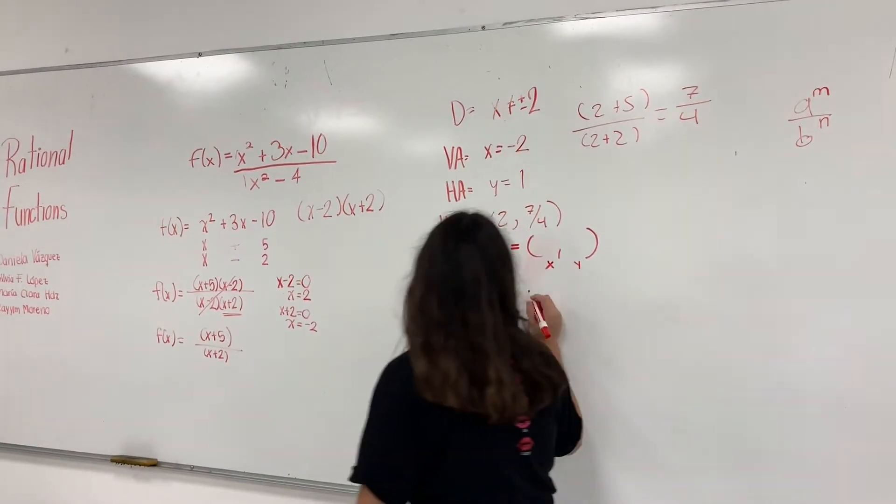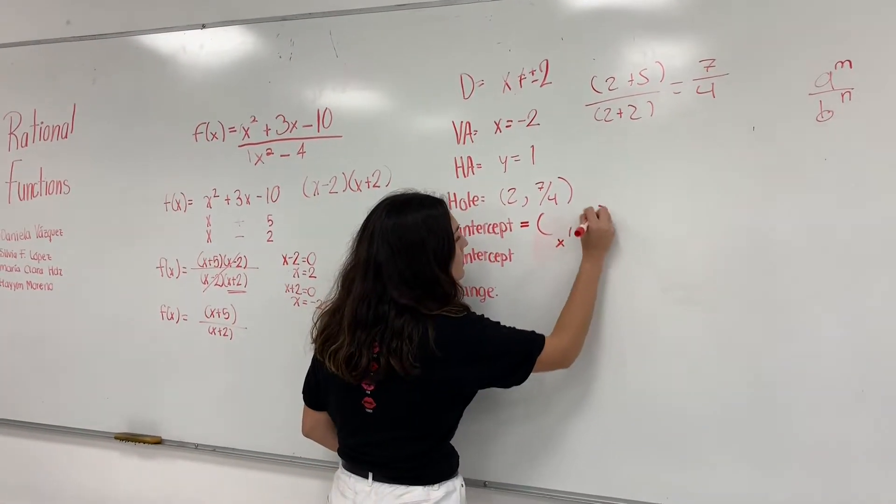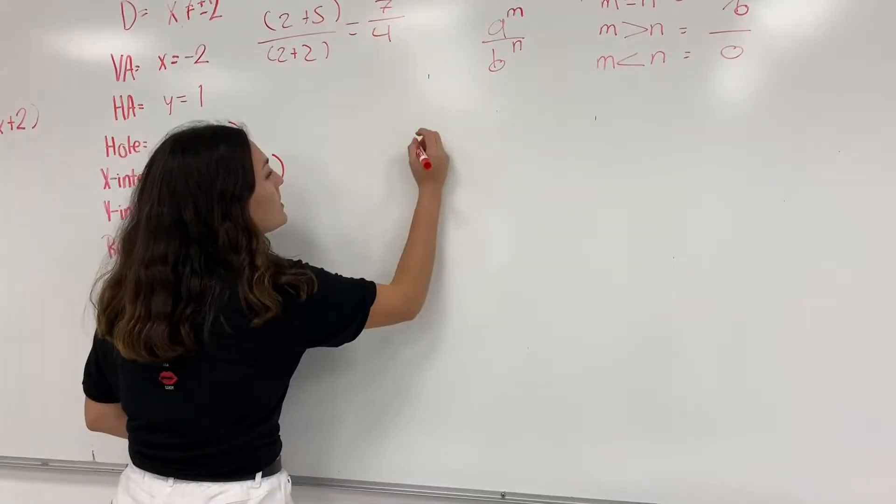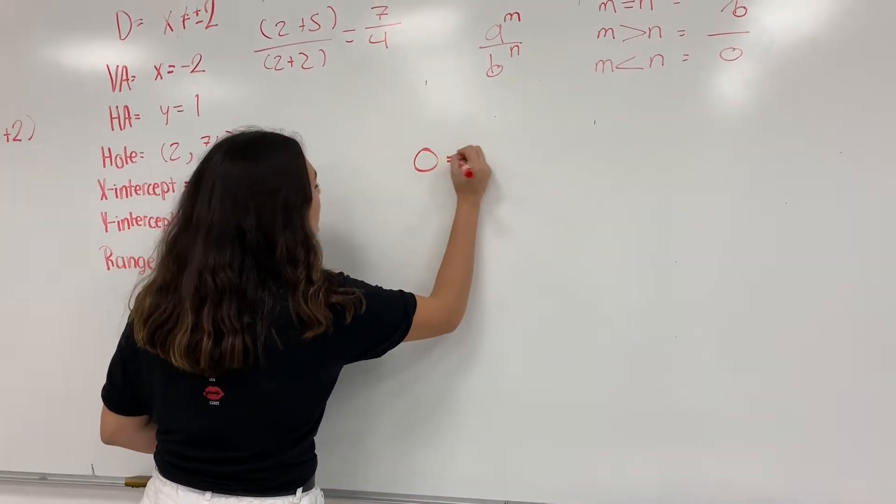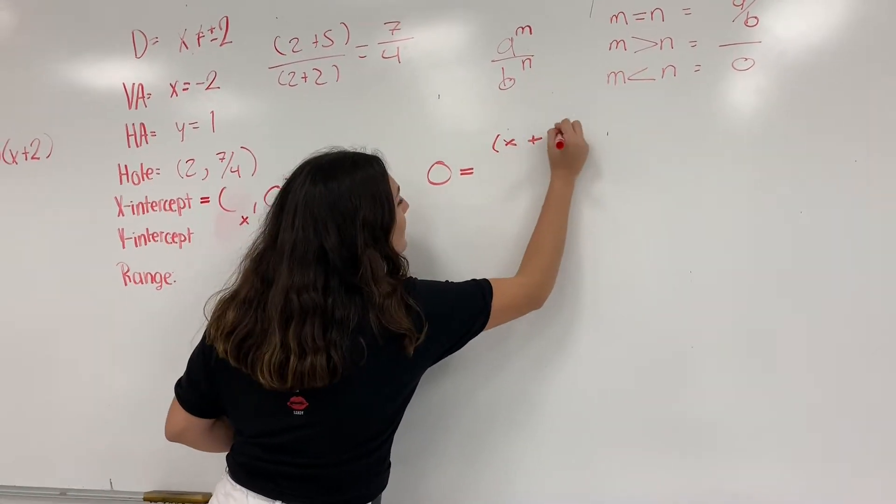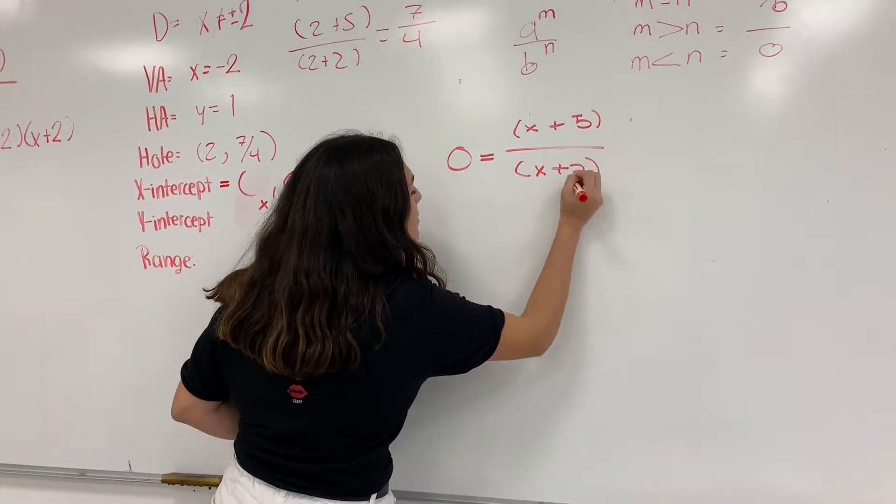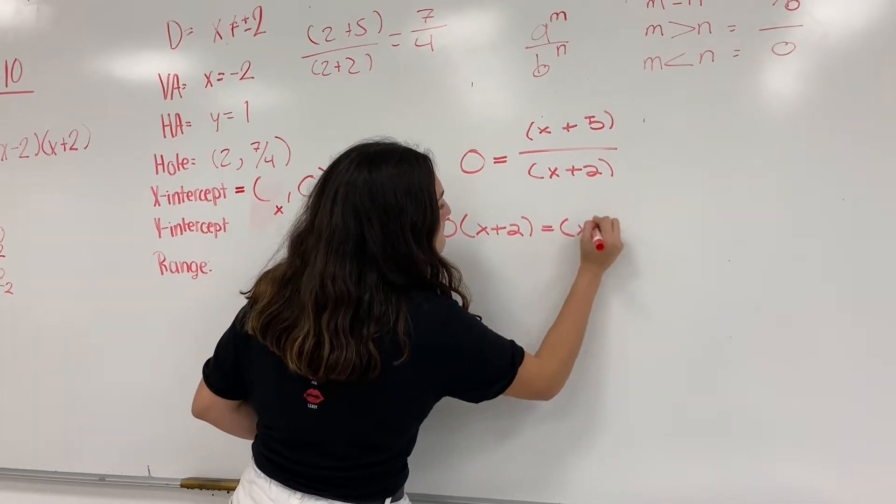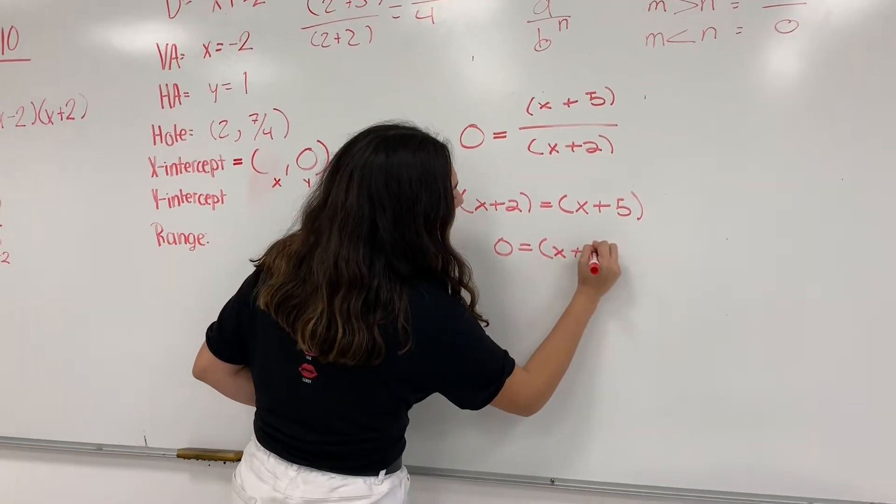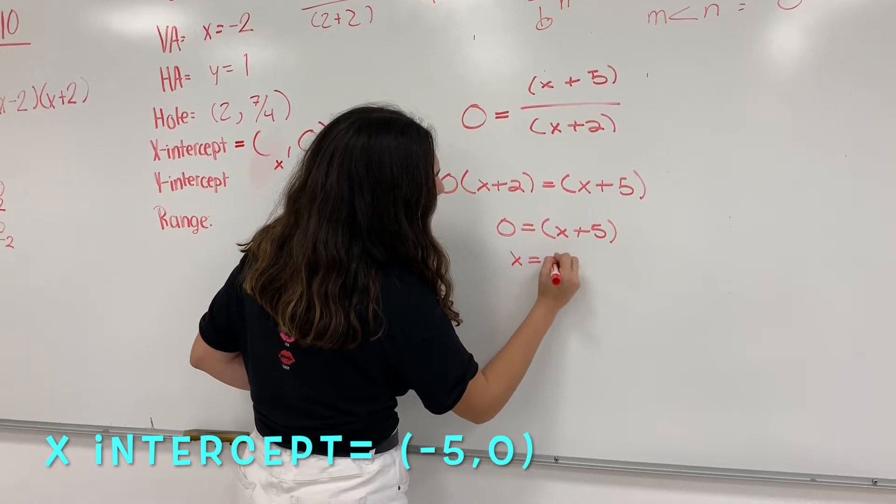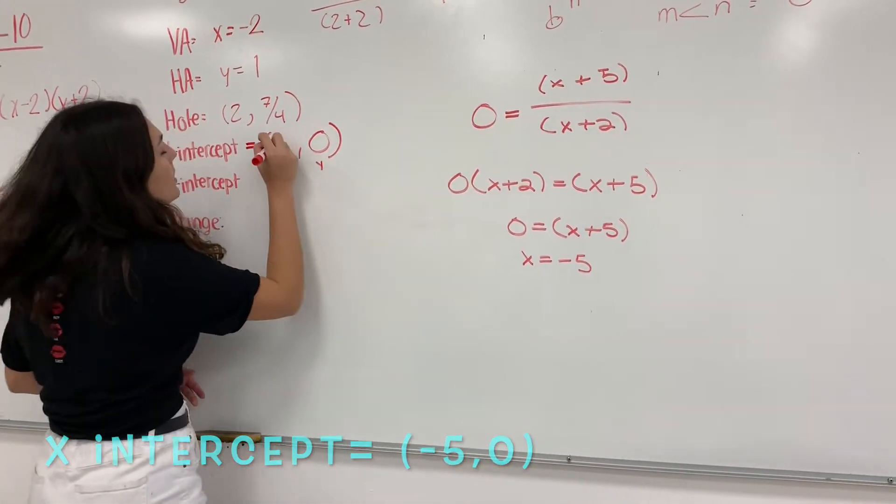To find the x-intercept, you need to substitute 0 for y. And the answer is negative 5. And you write it.